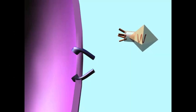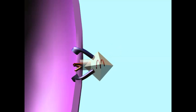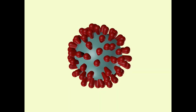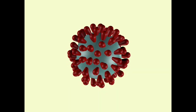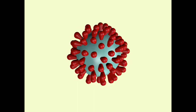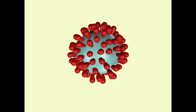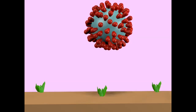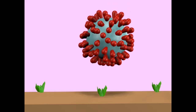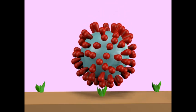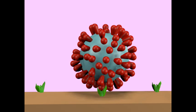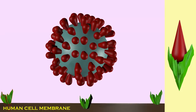Viruses can only bind to specific cells where they recognize a specific receptor. Coronaviruses have spike proteins, here indicated in red, which are the proteins of the virus that bind to a specific cell receptor in humans, allowing the virus to infect the cell. This protein, which serves as the receptor for coronavirus, is ACE2, the angiotensin converting enzyme 2, which is expressed on human cell membranes.